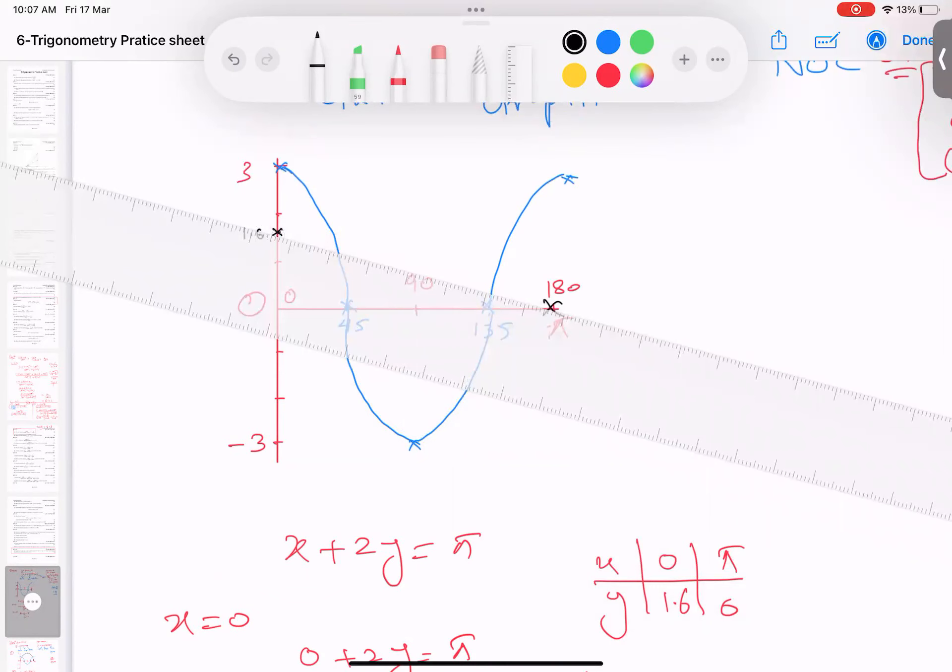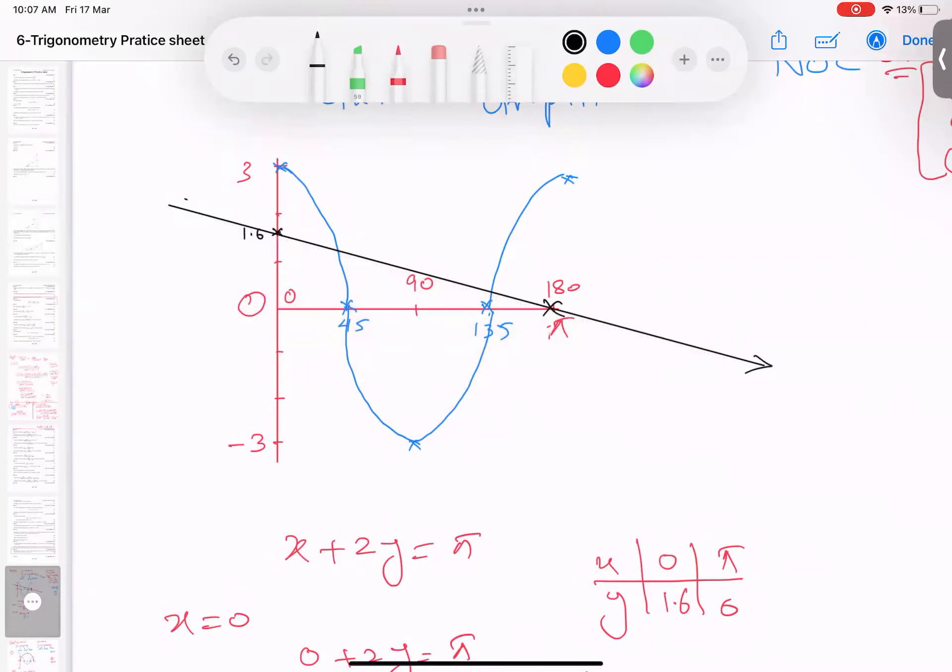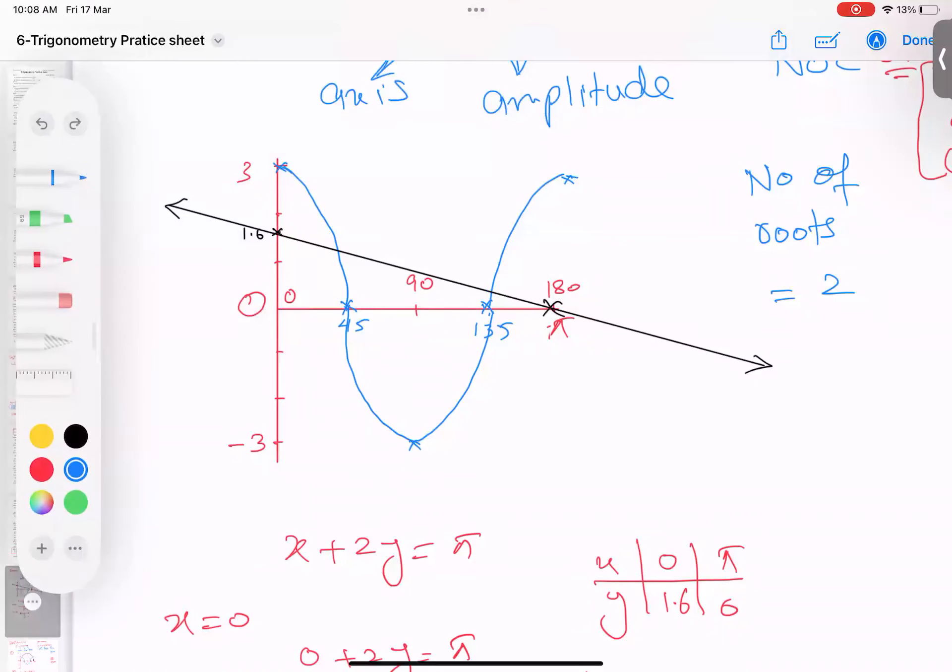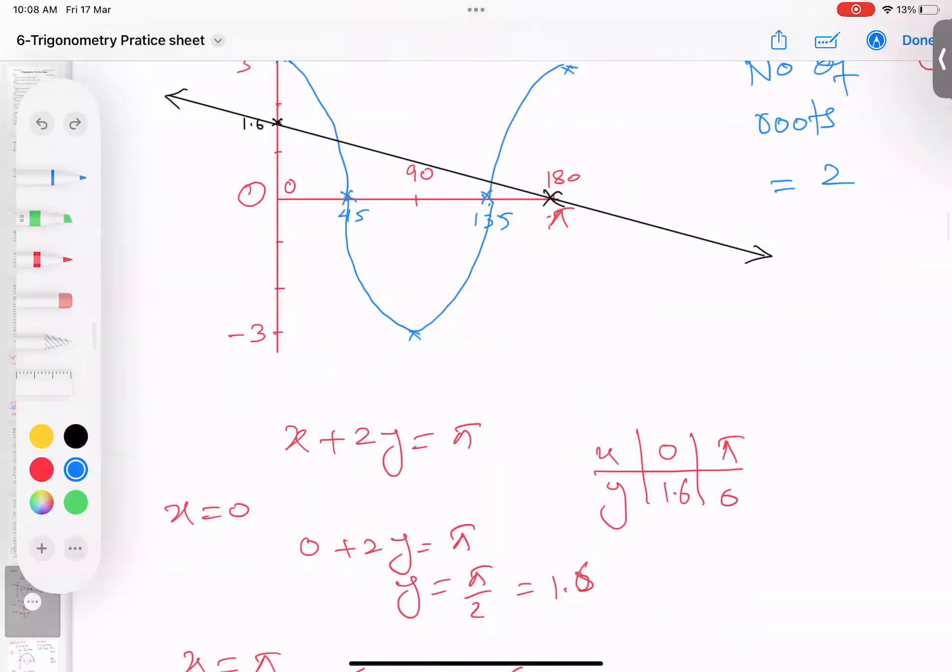I believe the point is very clear. And I have done it. This is. He is not asking sometimes. If he asks you the number of solutions, number of roots, then what are number of roots? Two. Logic. This blue line and curve intersecting at two points. So I believe the point is completely clear.